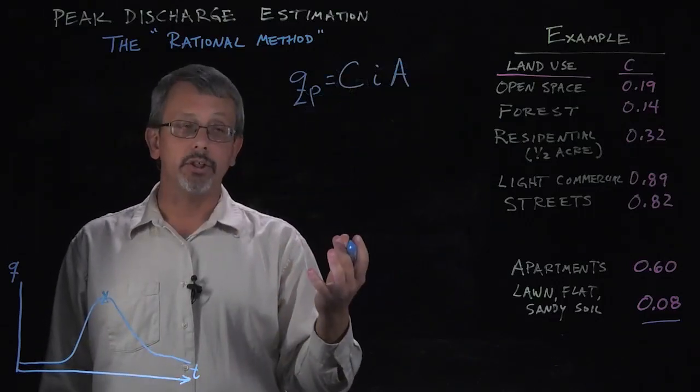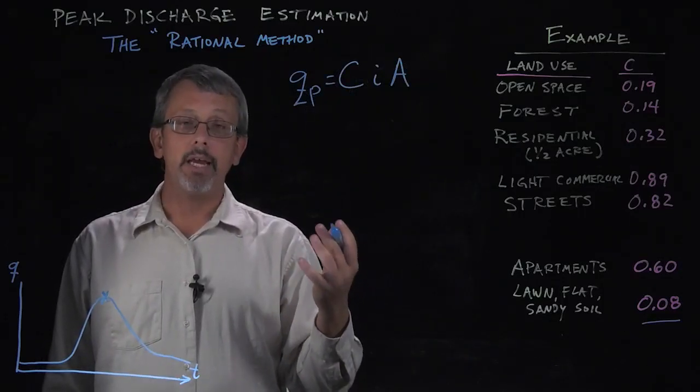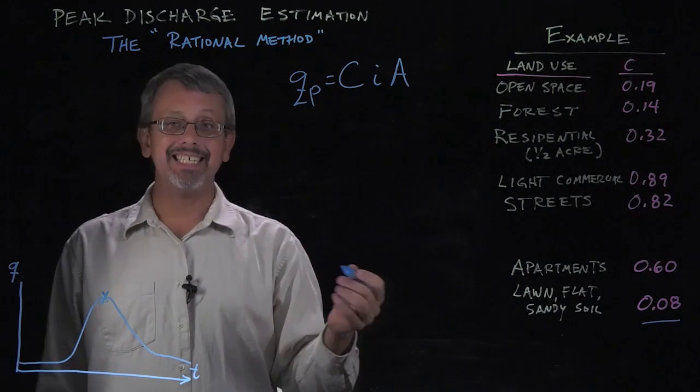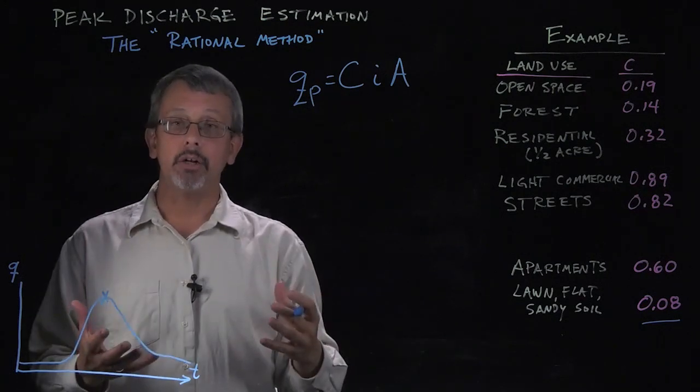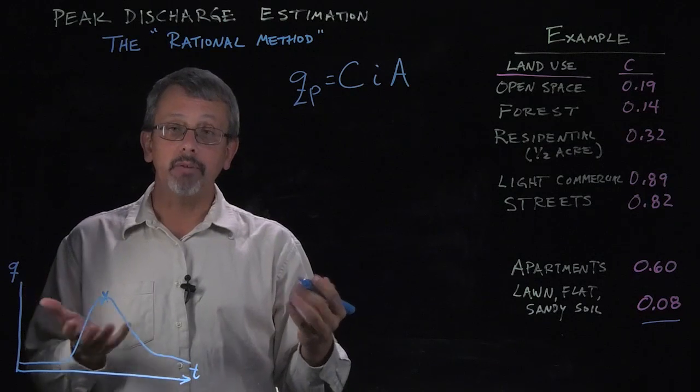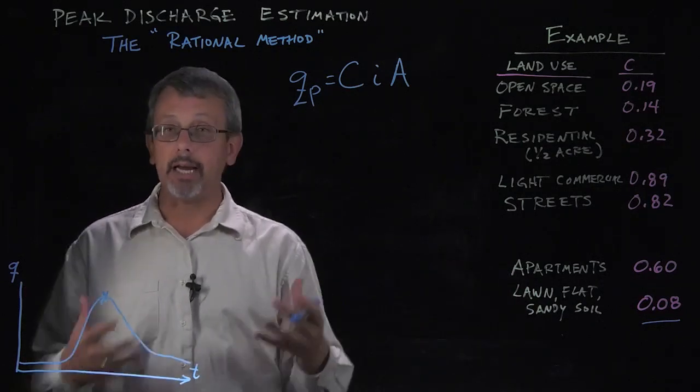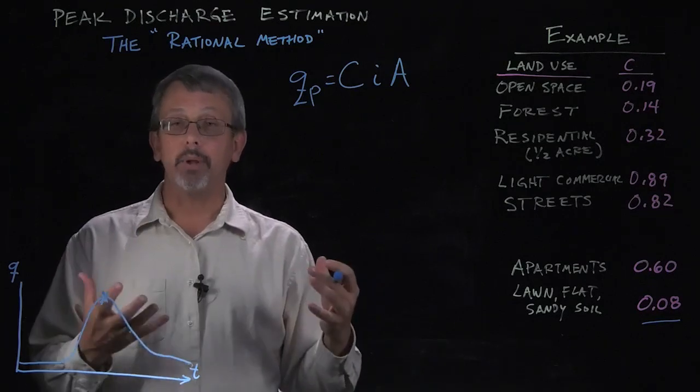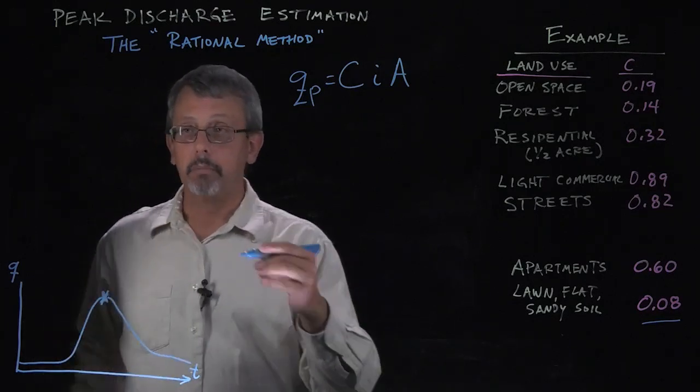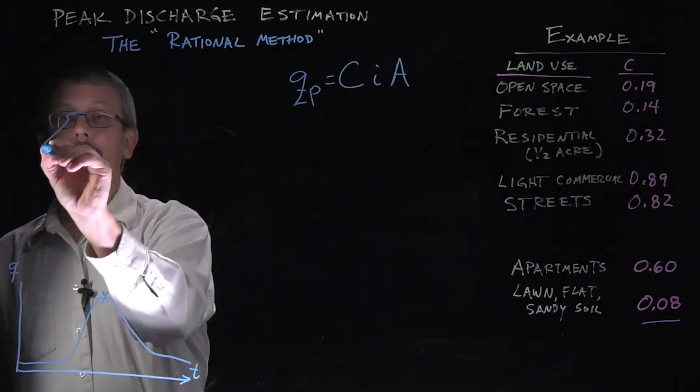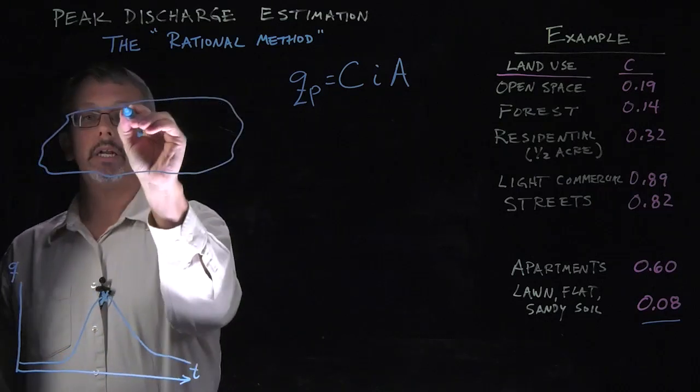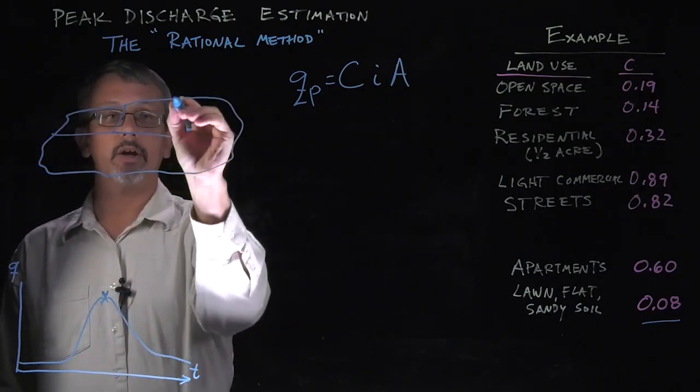Now we can apply the rational method even if we don't have a consistent classification of the area that we're talking about. For example, if the area you're looking at is not entirely apartments or not entirely flat lawn, we can still apply this rational method by dividing up the area we're interested in into different groups or categories.